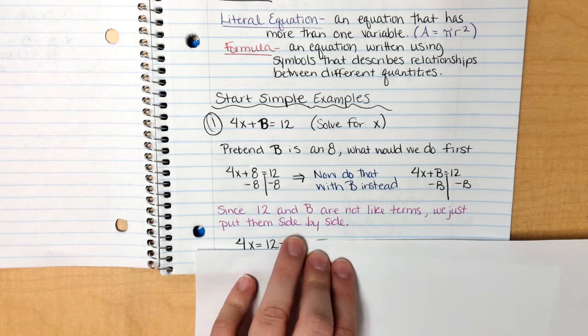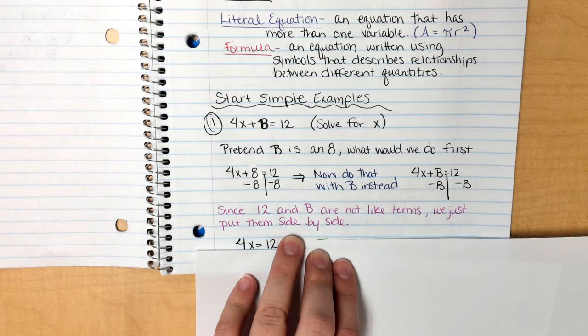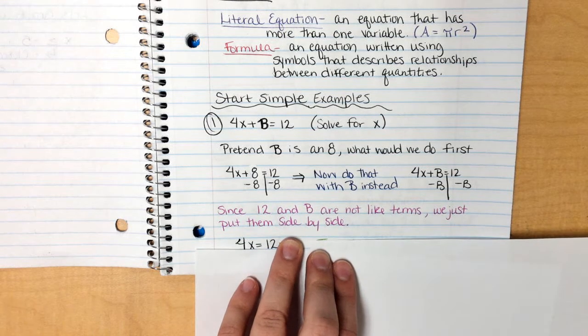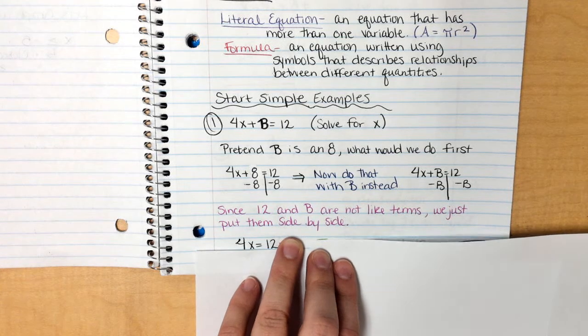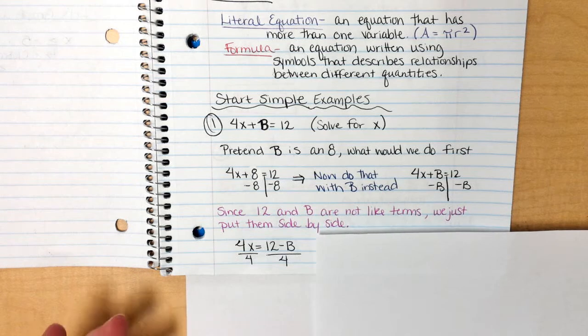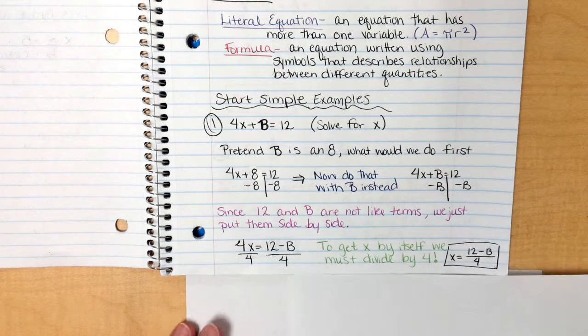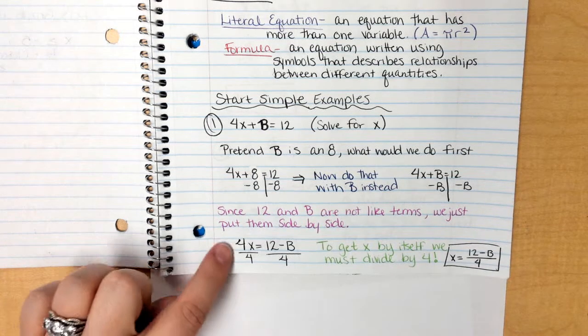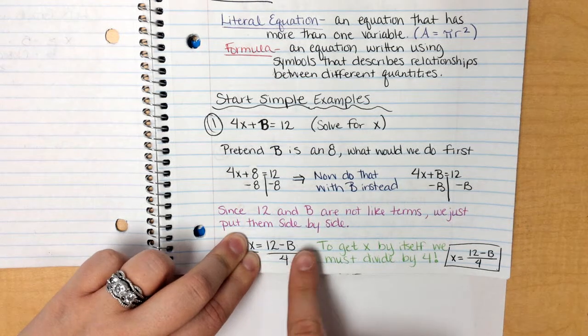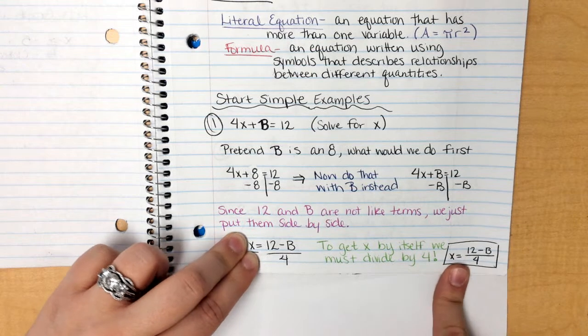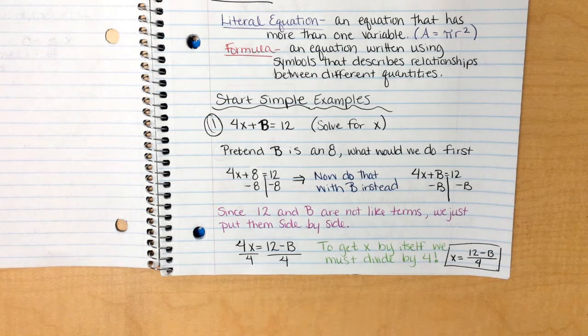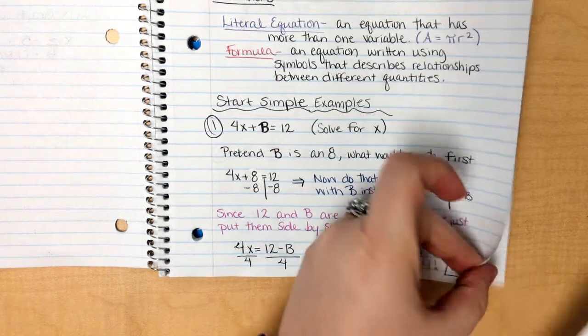Let's pretend for a second that this b is an 8, or let's pretend like this b isn't even here. If he wasn't here, how would I get x by itself? I would divide by 4. When you divide by 4, you're actually doing the exact same thing, even with b being there. Don't let him freak you out. So when we divide by 4, the 4s over here will cancel. Notice this says x equals 12 minus b over 4.